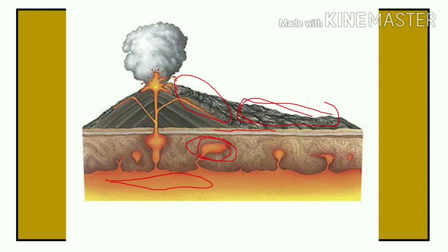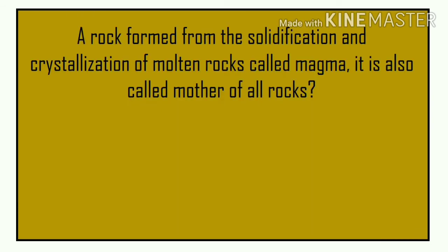Igneous rocks were the first to be formed and are known as primary rocks. Always remember: igneous rocks are the primary rocks — the origin of all rocks.